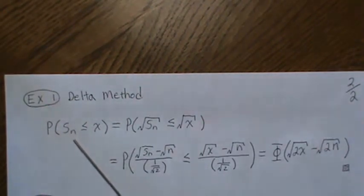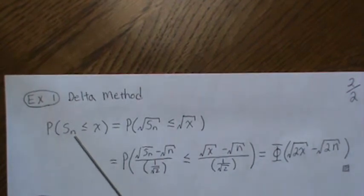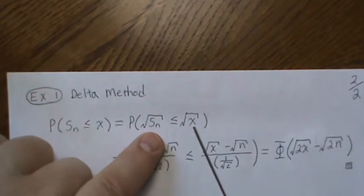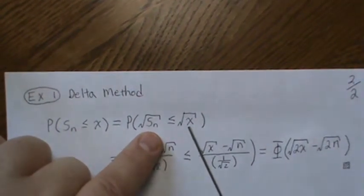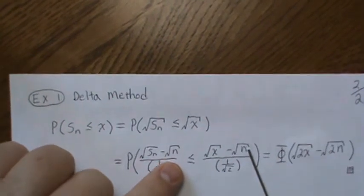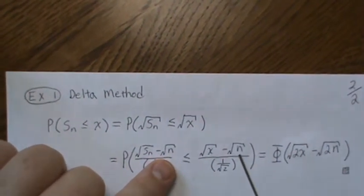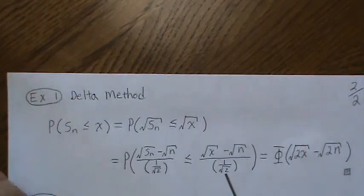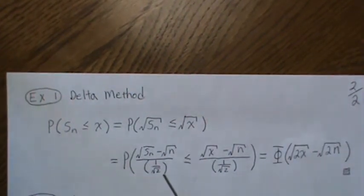If we want to find the probability of S_n less than X, this chi-square random variable less than X, we take the square root of both sides. We just showed if we subtract the square root of radical n and then divide by the standard deviation, this side is a standard normal distribution.